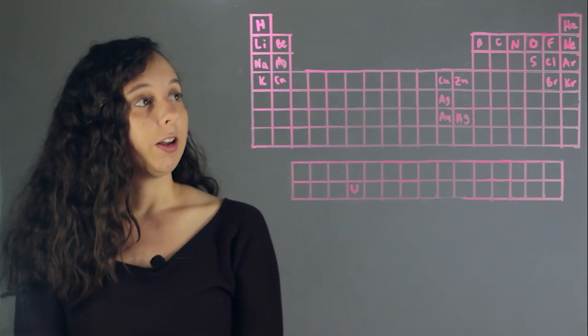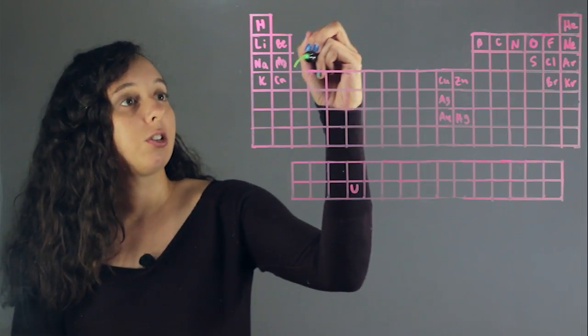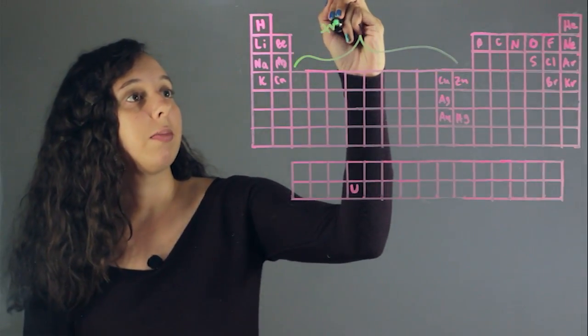And in general, the way that we organize our periodic table is, first of all, this middle chunk right here are called the transition metals.